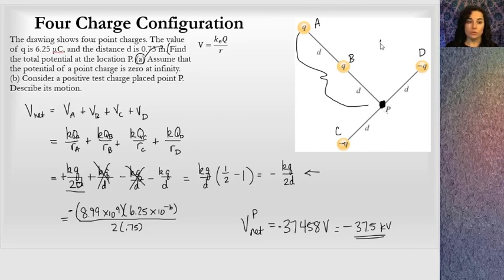If I move to another point, let's call this point Q, all of these charges would have a different radius. I would have to figure out what those radii are, and then add the potentials up again. But that's how you would solve that problem.